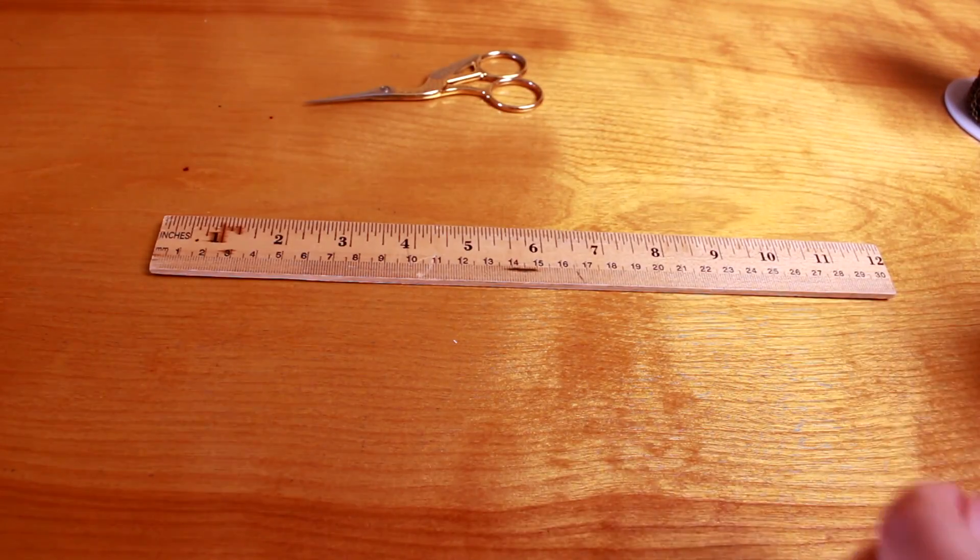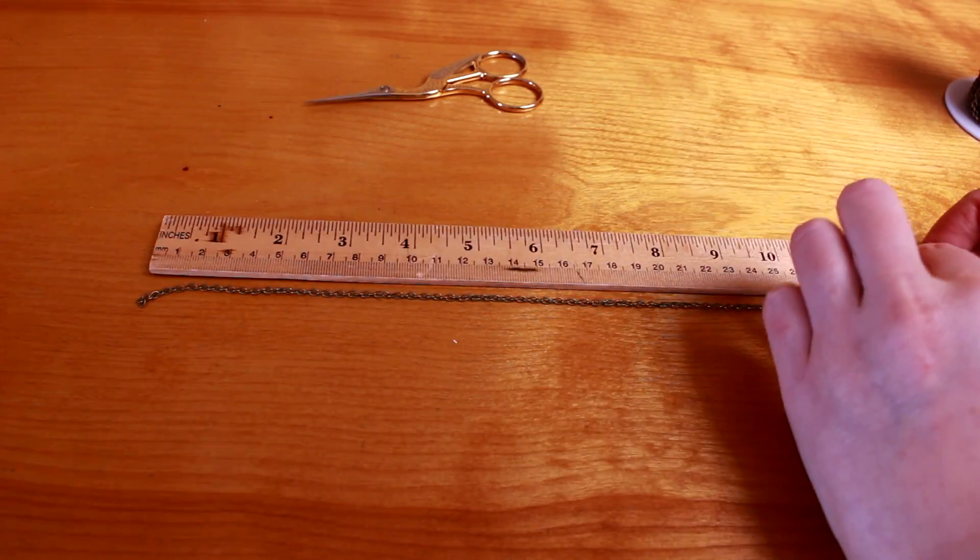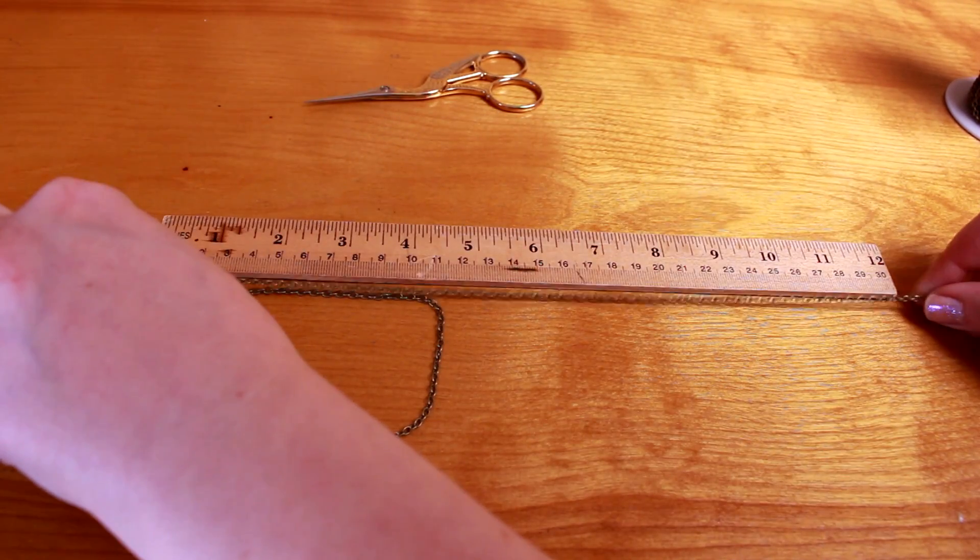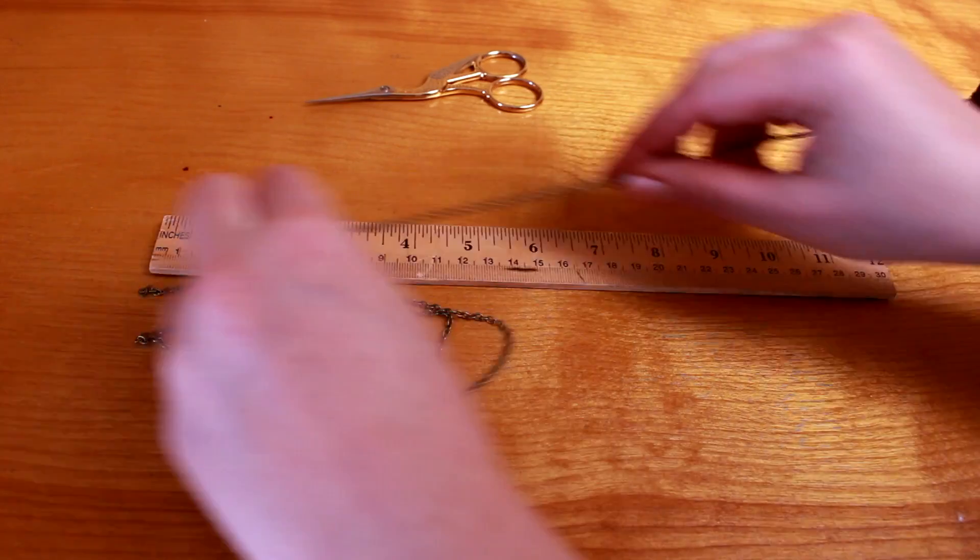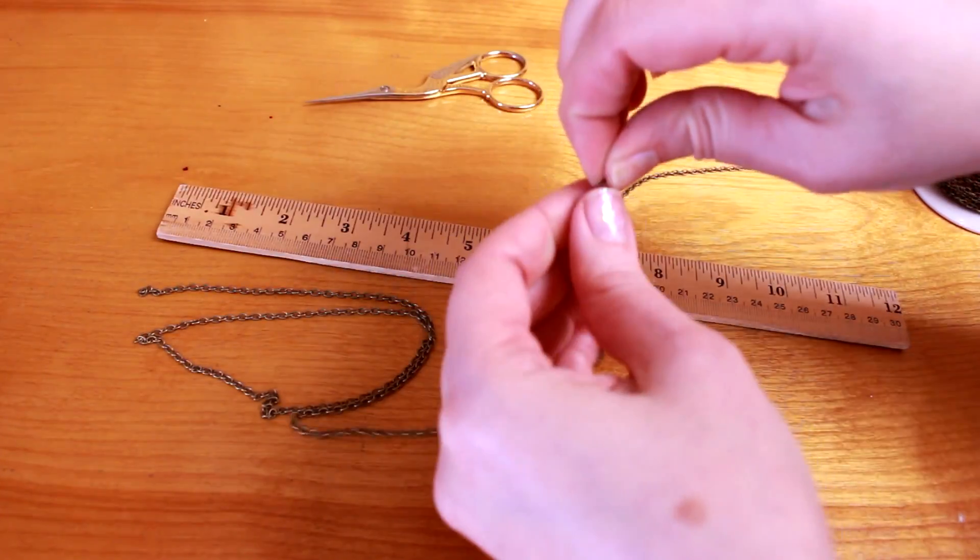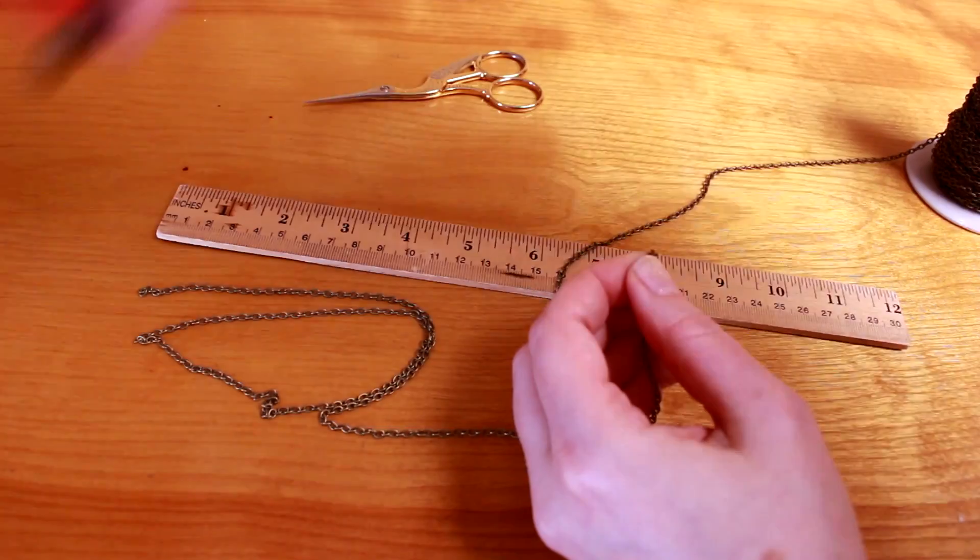You can also make your chain from scratch and here's how to do that. Step 1: Get yourself about 25 inches of your chain of choice. Chain comes in all kinds of colors, sizes, different link types, so don't be afraid to get wacky.